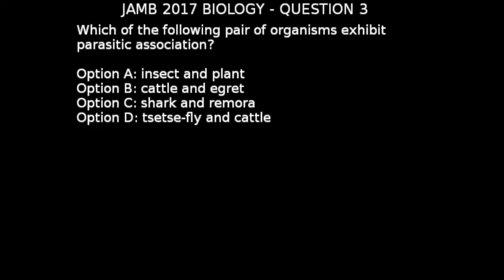JAM 2017 biology question 3: which of the following pair of organisms exhibit parasitic association? Option A: insects and plants. Option B: cattle and egrets. Option C: shark and remora. Option D: tsetse fly and cattle.